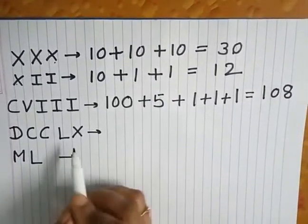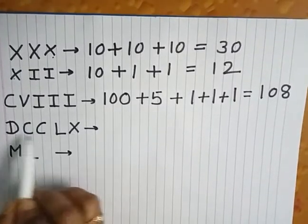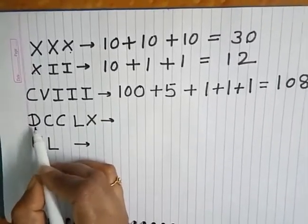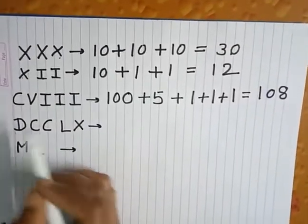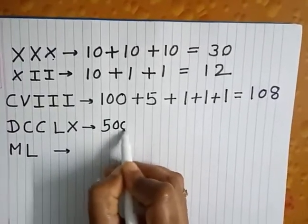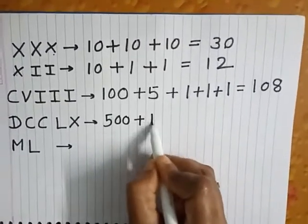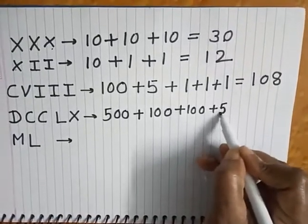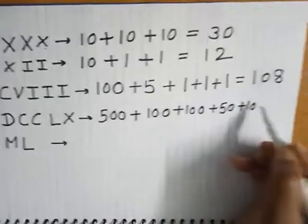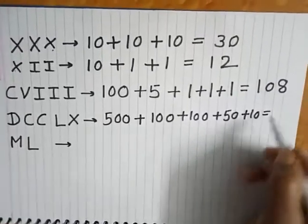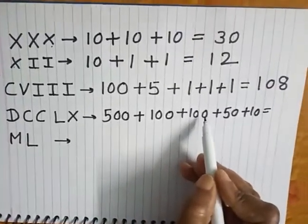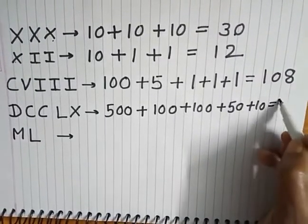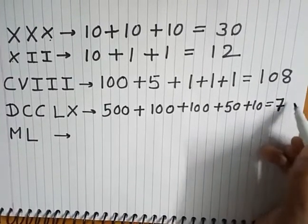Next example: DCCLX. D is 500, C is 100, the second C is also 100, L is 50, and X is 10. So the value is 500 plus 100 plus 100 plus 50 plus 10. That gives us 500 plus 200 plus 60, which equals 760.